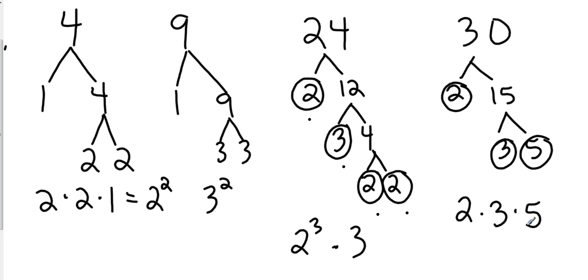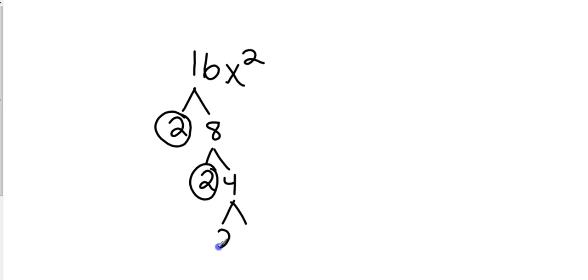Now that's pretty familiar to us. What if I took sixteen x squared? What if I did sixteen x squared? Just like we did in the past with our dividing rationals. Let's look at the number and the variable separately. So let's factor sixteen. So I'm going to go two and eight, two and four, and then two and two.